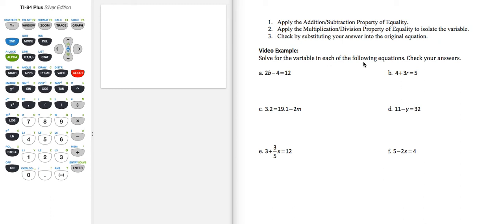Here we're asked to solve for the variable in each of the following equations and then check our answers. These problems are going to involve a couple of steps. In general, our process is to apply the addition-subtraction property of equality, followed by the multiplication-division property, and then check our result. This process will get us through a lot of these problems that are a little bit more complicated and involve more than one step.